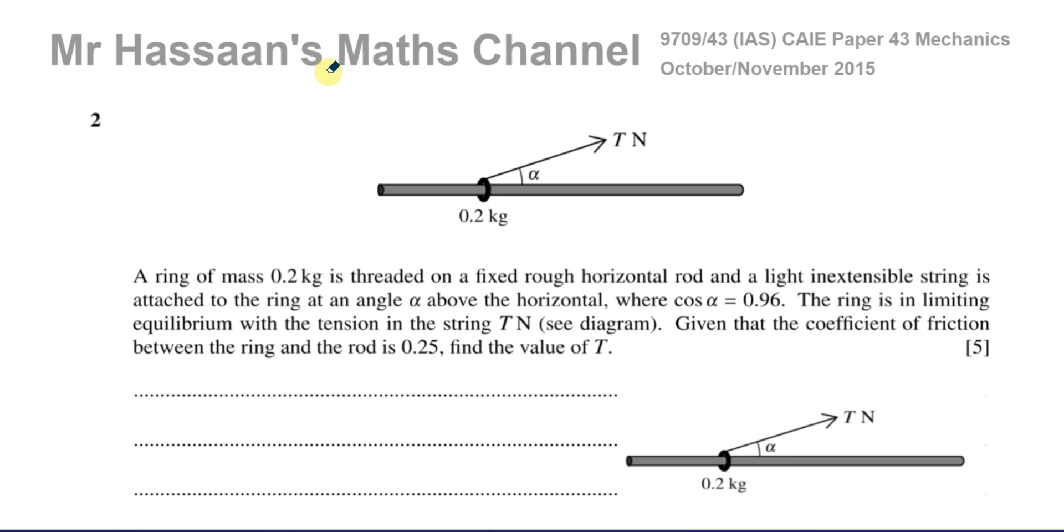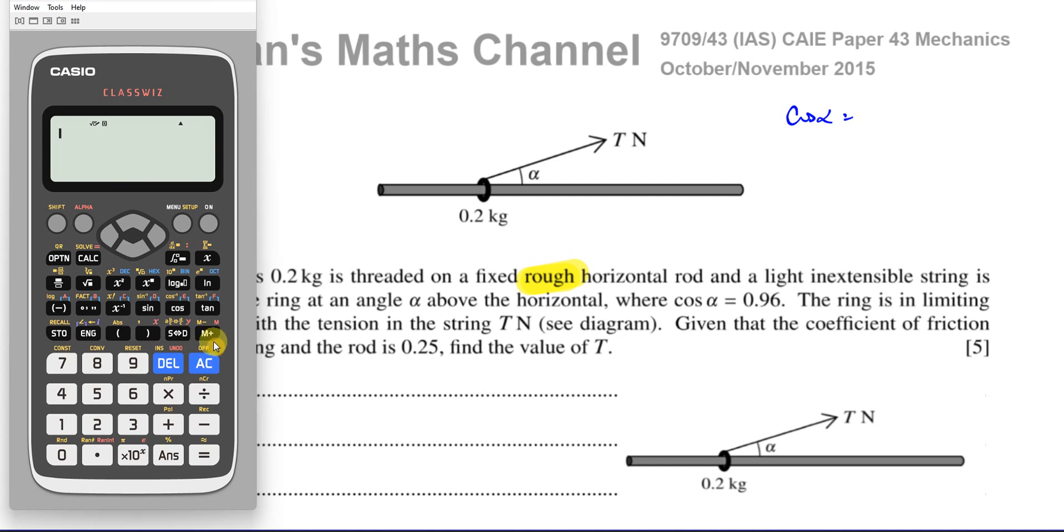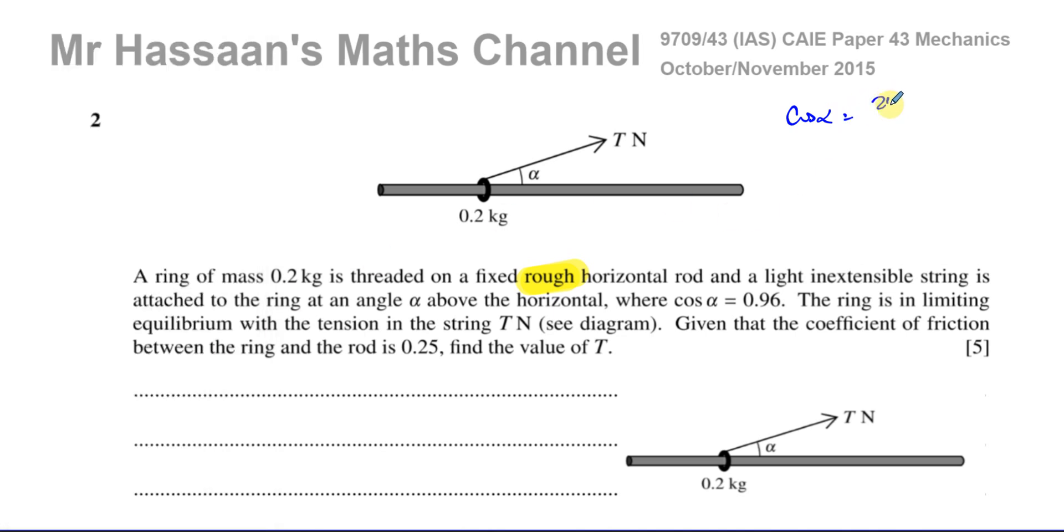We have a question about statics. A ring of mass 0.2 kilograms is threaded on a fixed rough horizontal rod, so there's going to be some friction. A light inextensible string is attached to the ring at an angle of alpha above the horizontal where the cosine of alpha is equal to 0.96. I would like to express that as a fraction, 96 over 100, that's 24 over 25. That makes life easier later on.